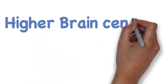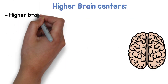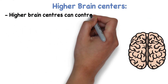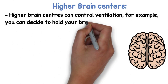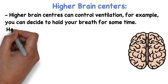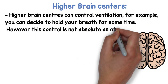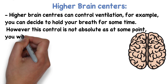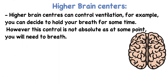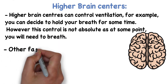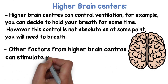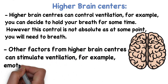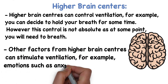Higher brain centers have some control over ventilation. For example, you can decide to hold your breath for some time; however, this control is not absolute, as at some point you will need to breathe. Other factors from higher brain centers can stimulate ventilation — for example, emotions such as anxiety.